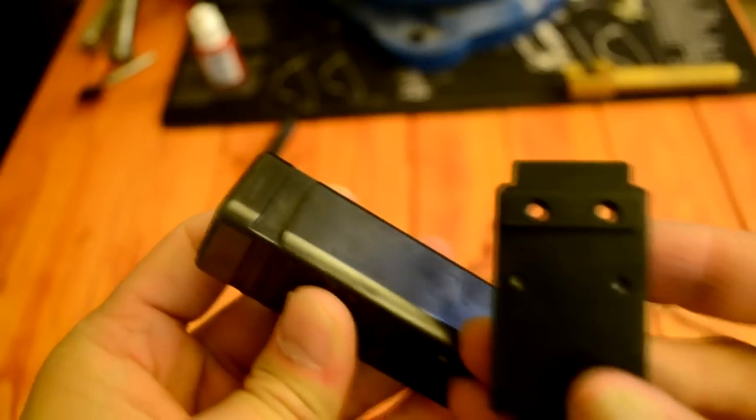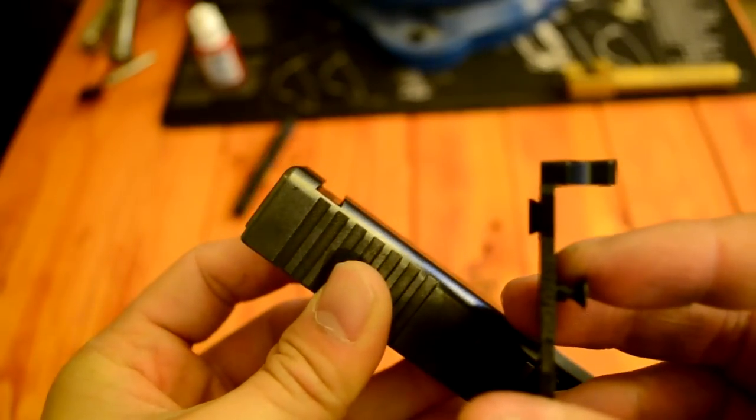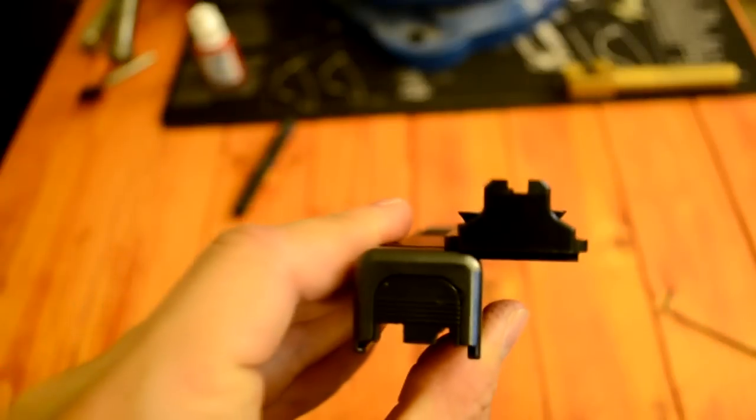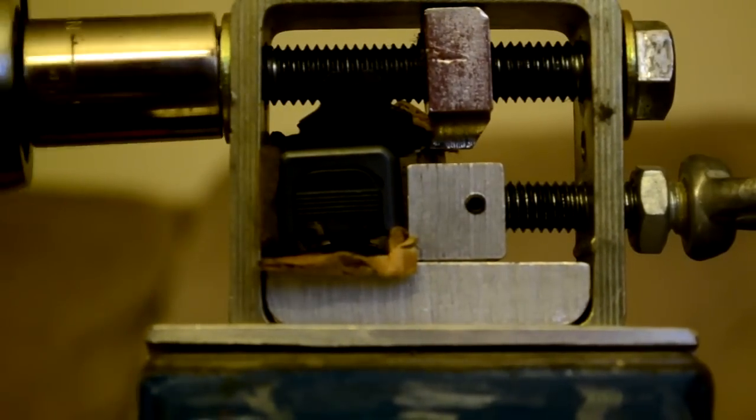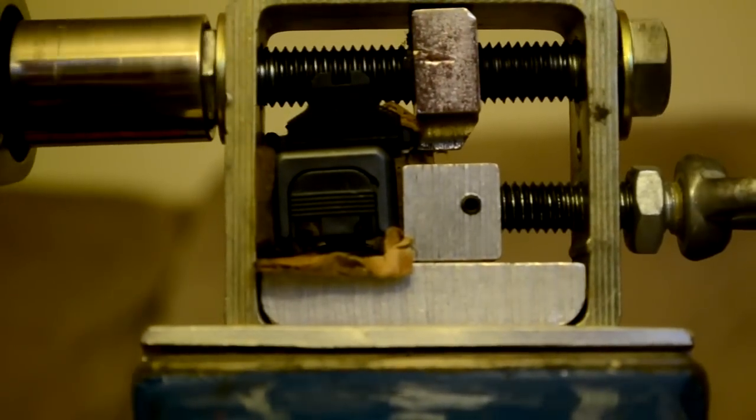Now we're going to install the sight base. Make sure to remove the set screws prior to inserting the base into the slide. If you're using a sight pusher instead of a hammer and punch, you're going to have to adjust the blocks on the sight pusher to accommodate the taller height of the sight base due to the backup irons.